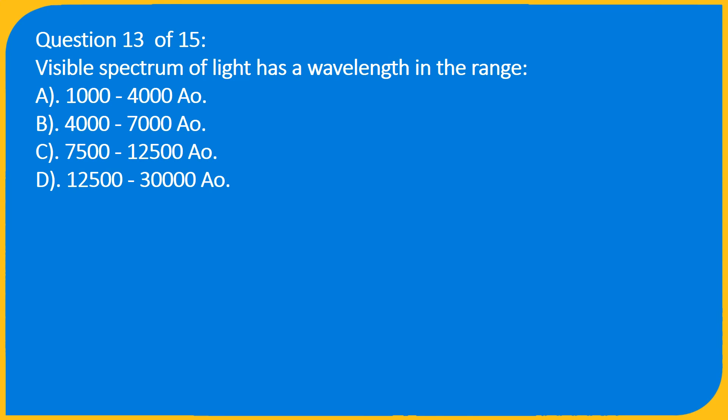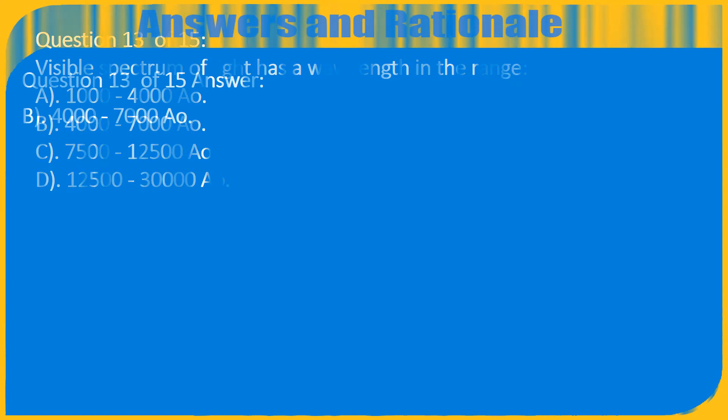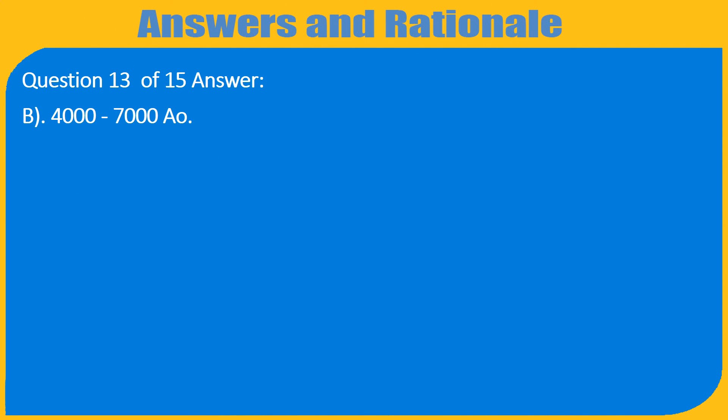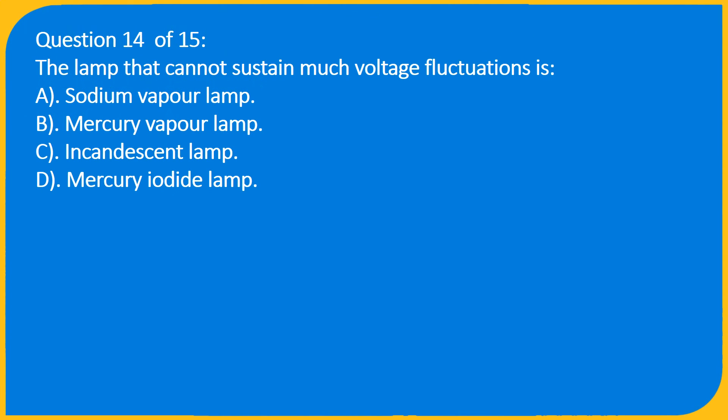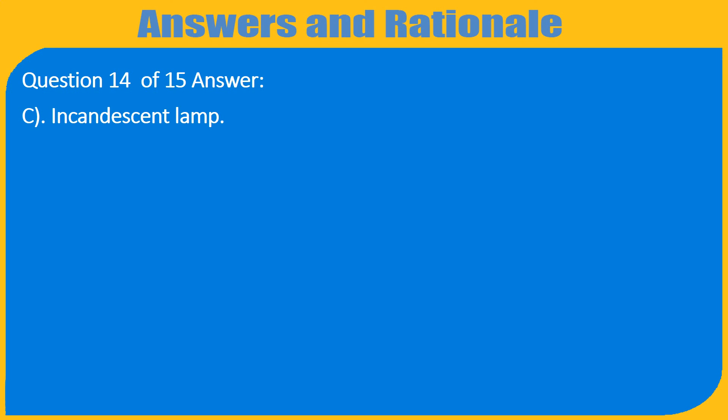Question 13 of 15: Visible spectrum of light has a wavelength in the range A. 1000 to 4000 Å, B. 4000 to 7000 Å, C. 7500 to 12500 Å, D. 12500 to 30,000 Å. Question 14 of 15: The lamp that cannot sustain much voltage fluctuations is A. Sodium vapor lamp, B. Mercury vapor lamp, C. Incandescent lamp, D. Mercury iodide lamp. Answer: C. Incandescent lamp.